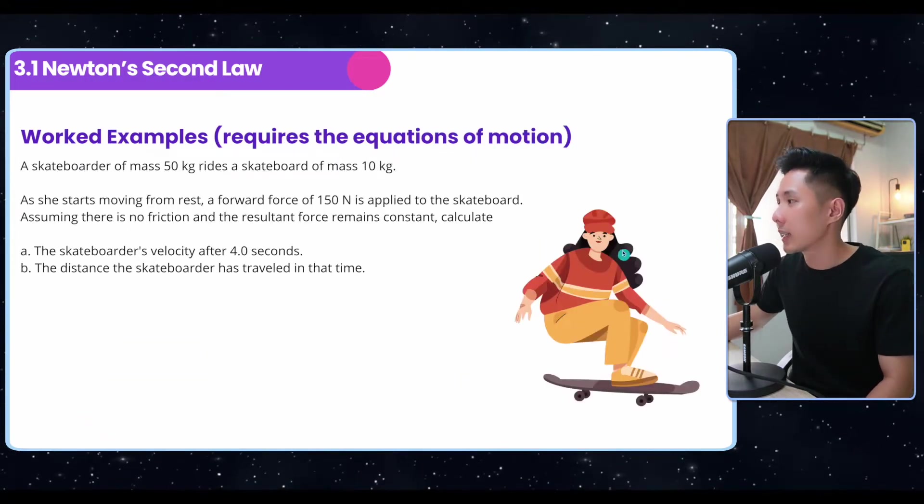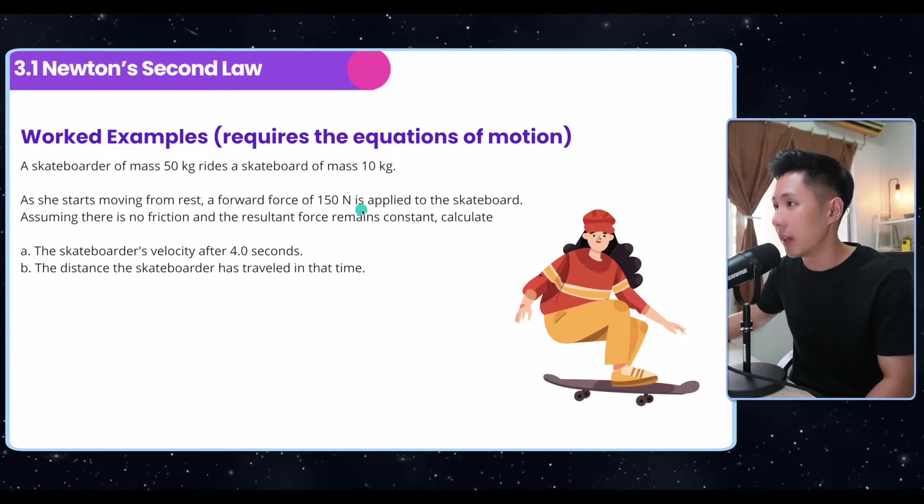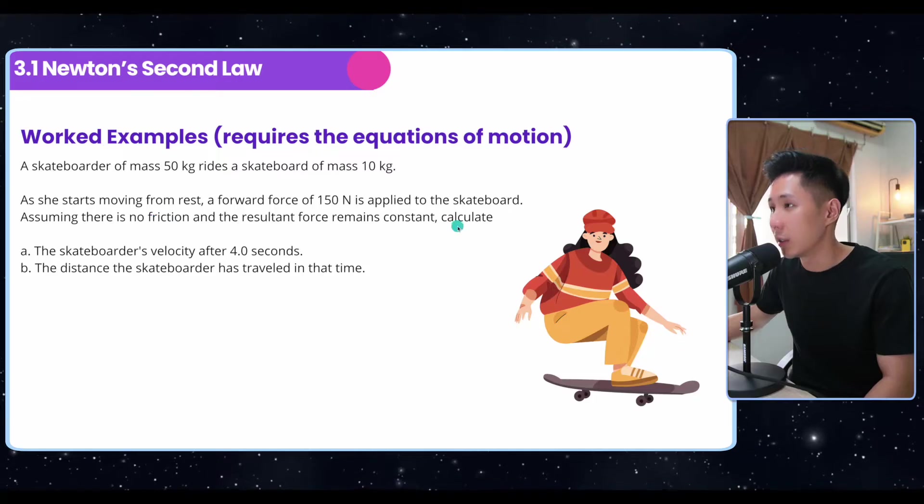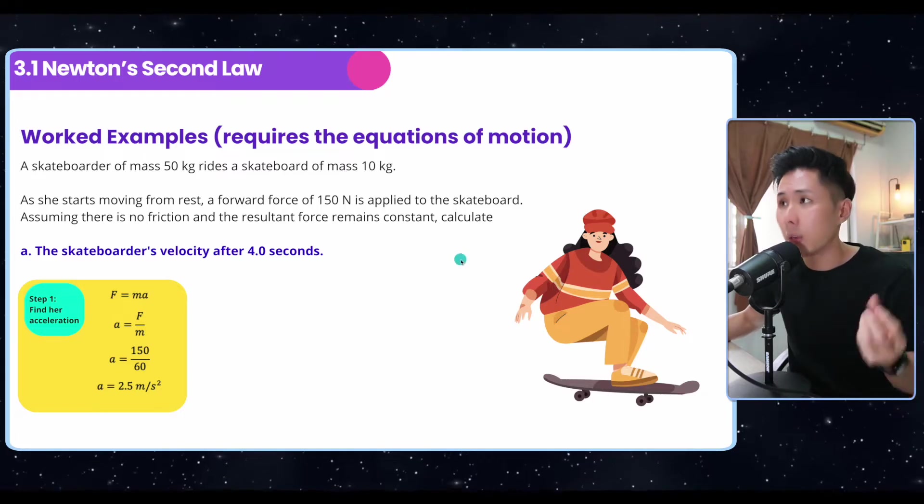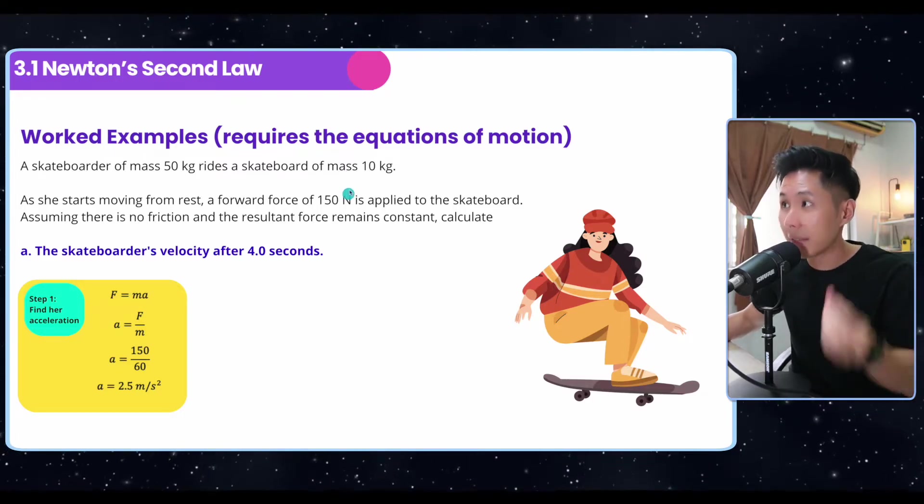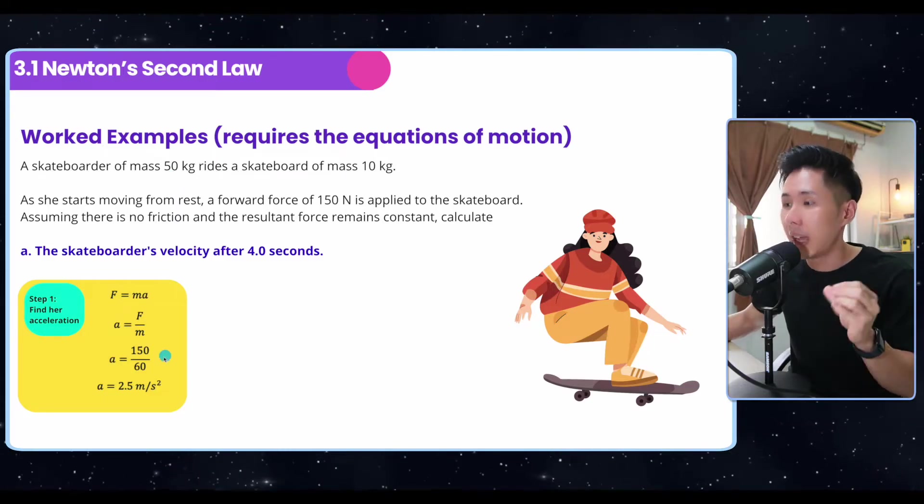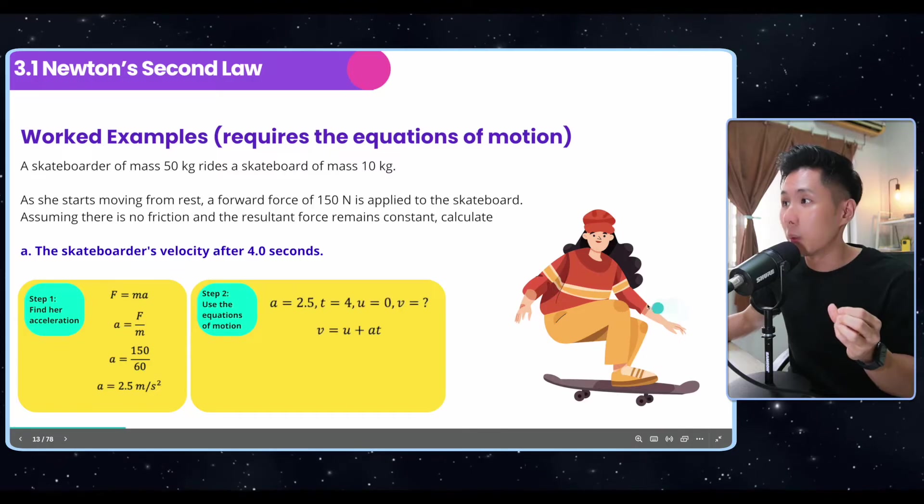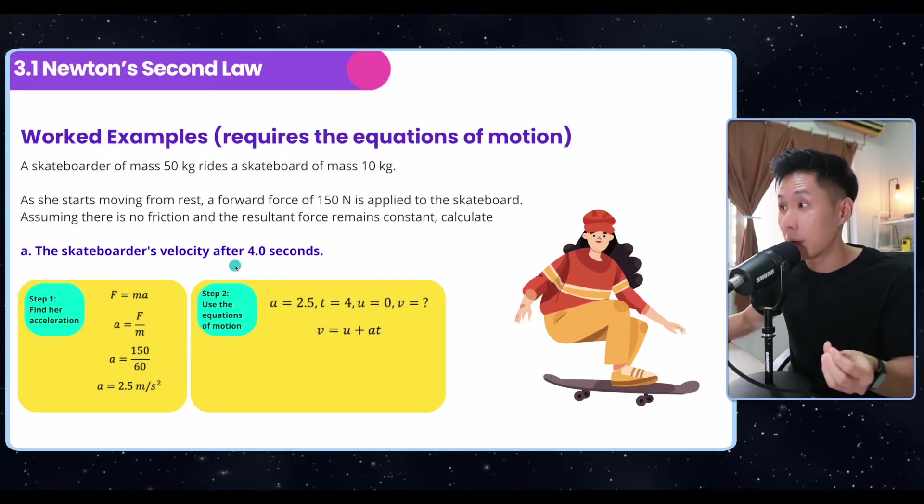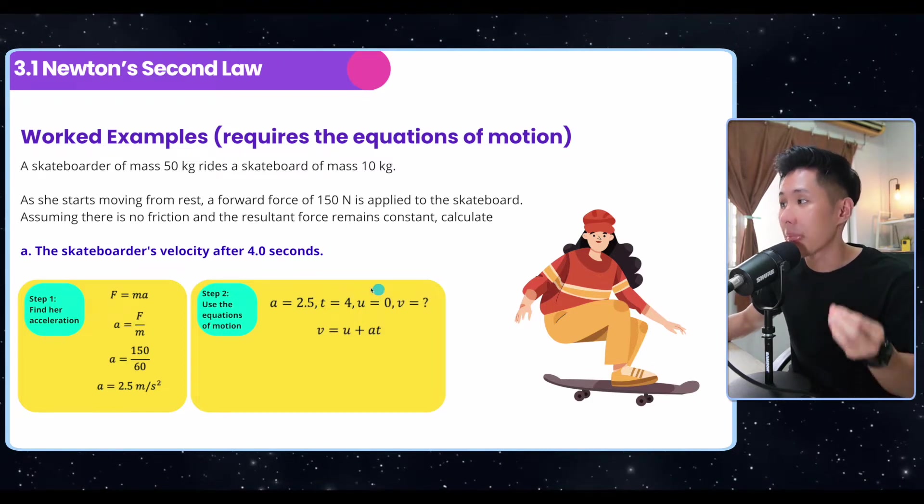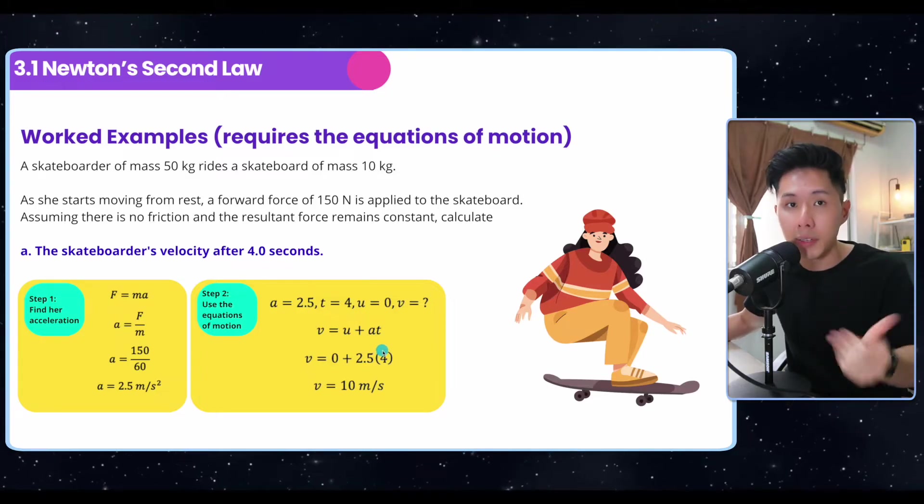Another question: this skateboarder is 50 kg and the skateboard is 10 kg. She moved with a forward force of 150 Newtons. Assuming there's no friction, what's the skateboarder velocity after 4 seconds? First find the acceleration. You have the force, and you need to add 50 to 10 because that's the combined mass. Then you'll be able to find the acceleration. With the acceleration, you can find the skateboarder velocity after 4 seconds. So a is 2.5, t is 4, u is 0. Use the equation of motion and you will find the final velocity.